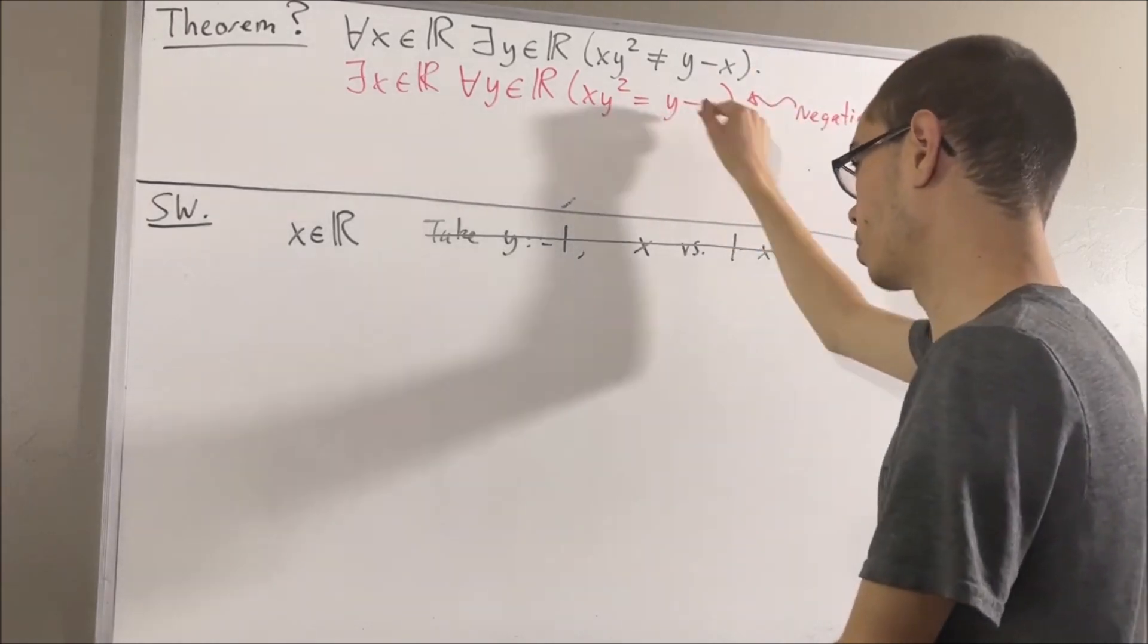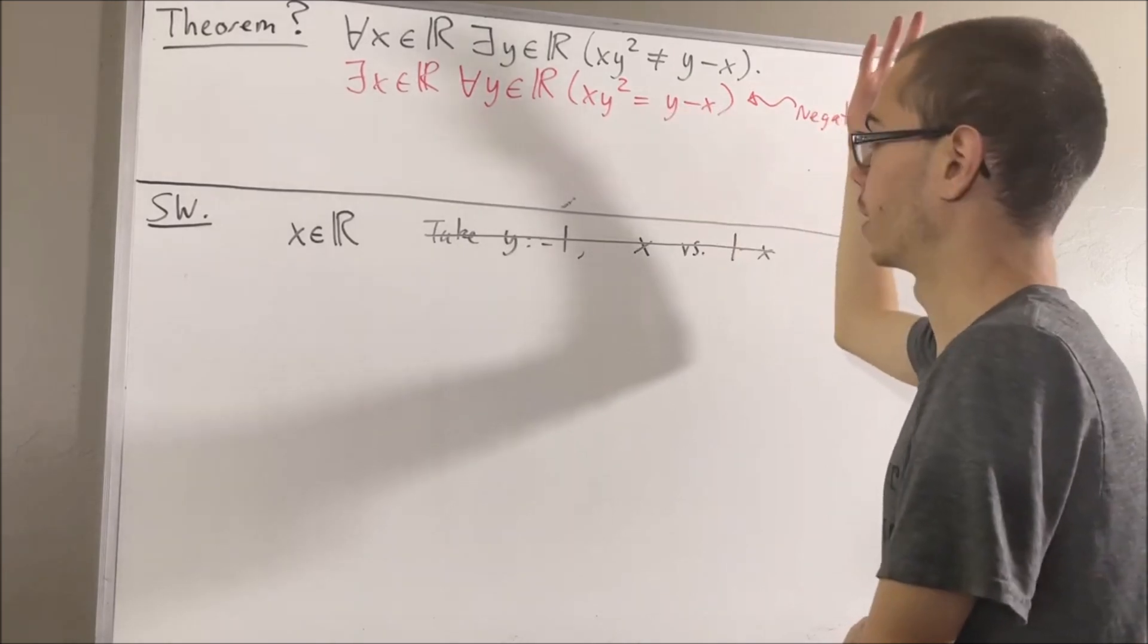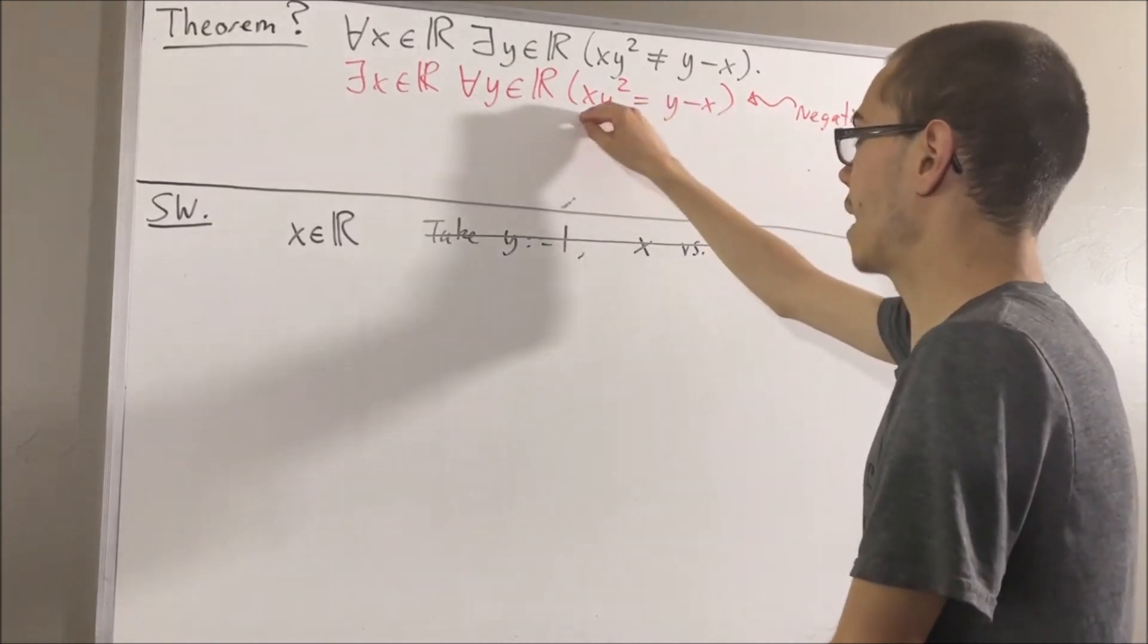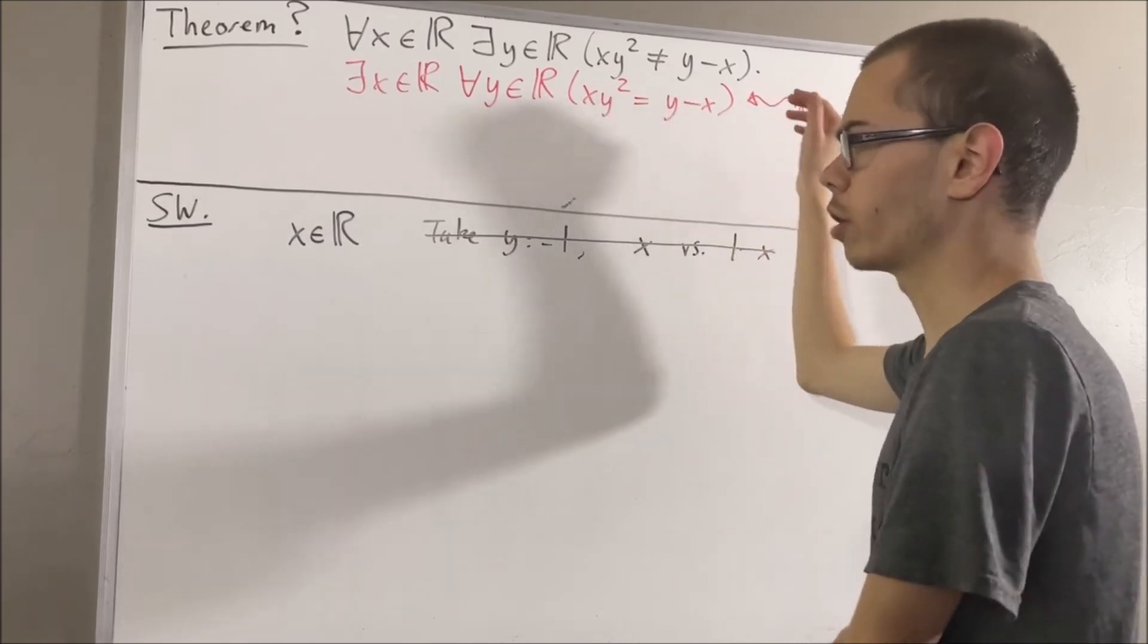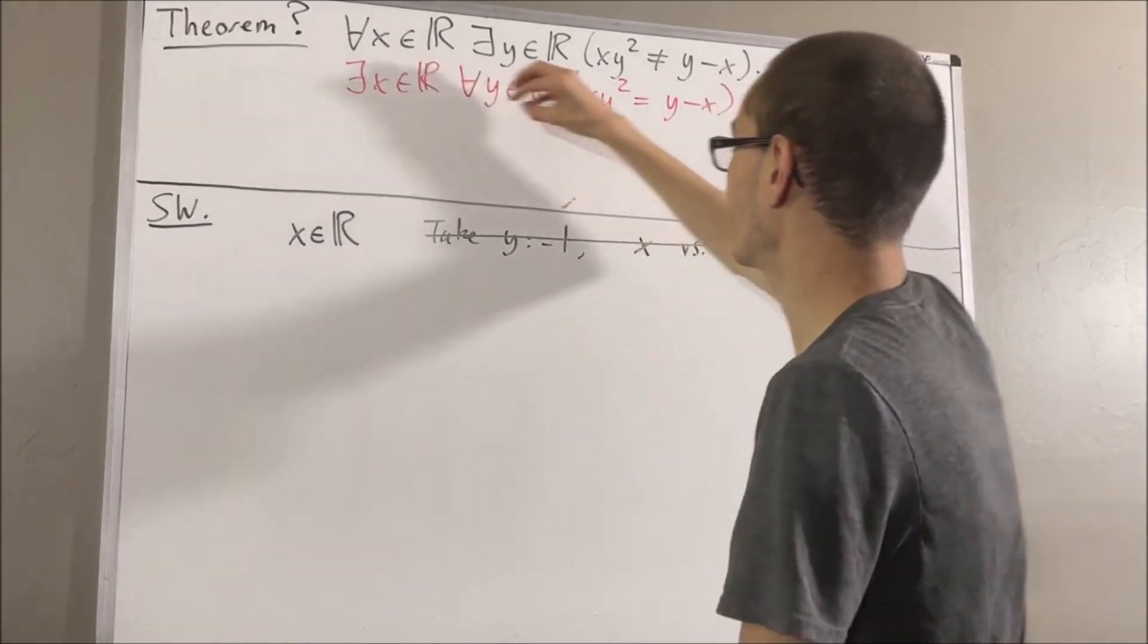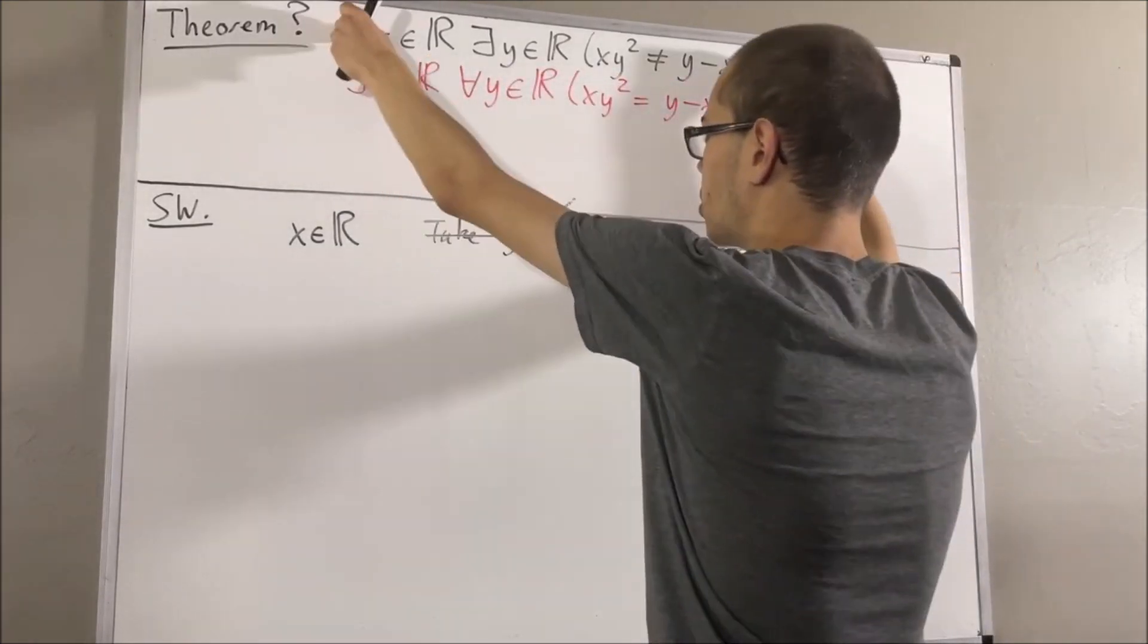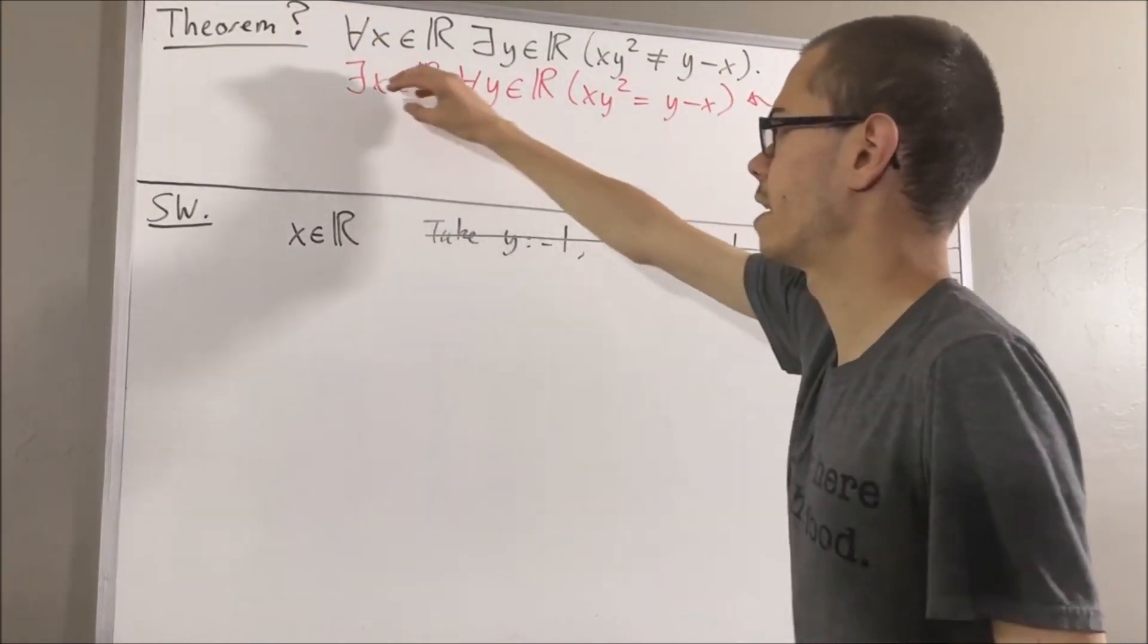Right? Like if x equals zero, clearly they're not the same thing. But if x is equal to anything other than zero, then there's no way that would work either. So it seems like there's no way the negation could be true. We must instead have that this is true. So let's just try not proving the negation.